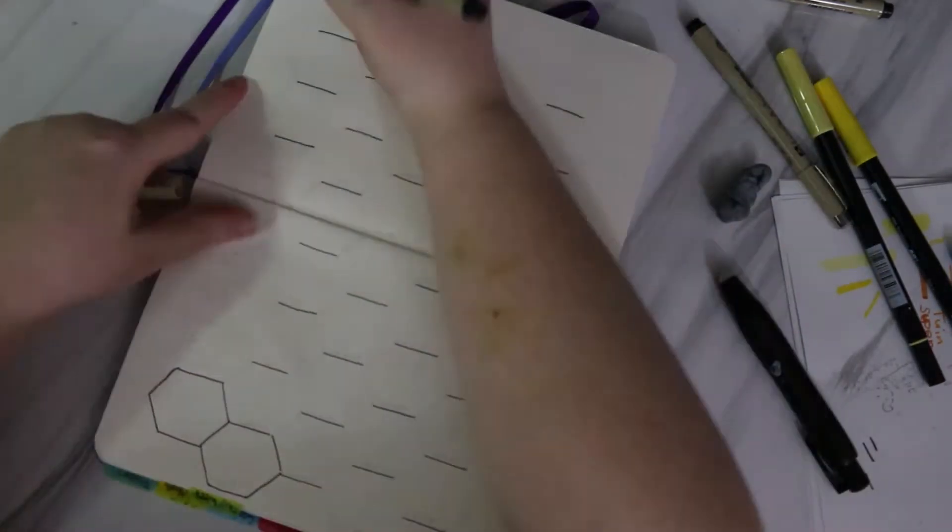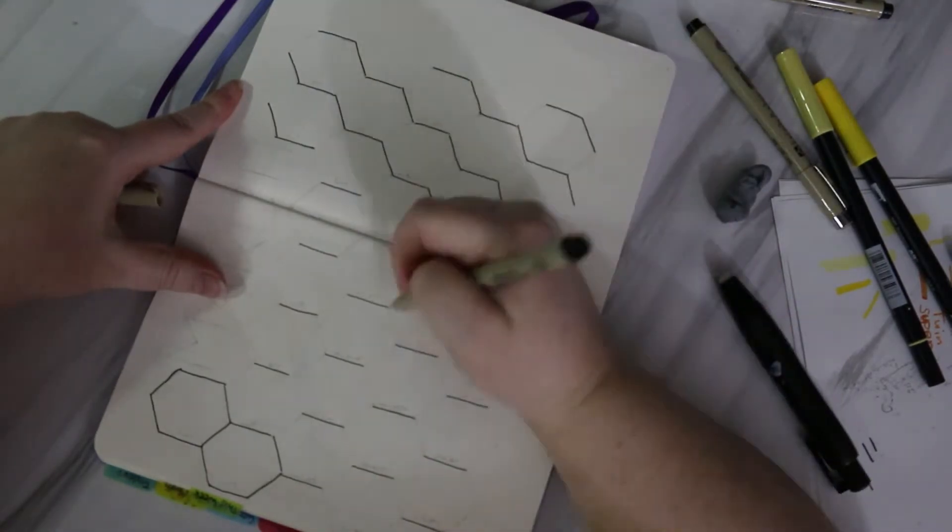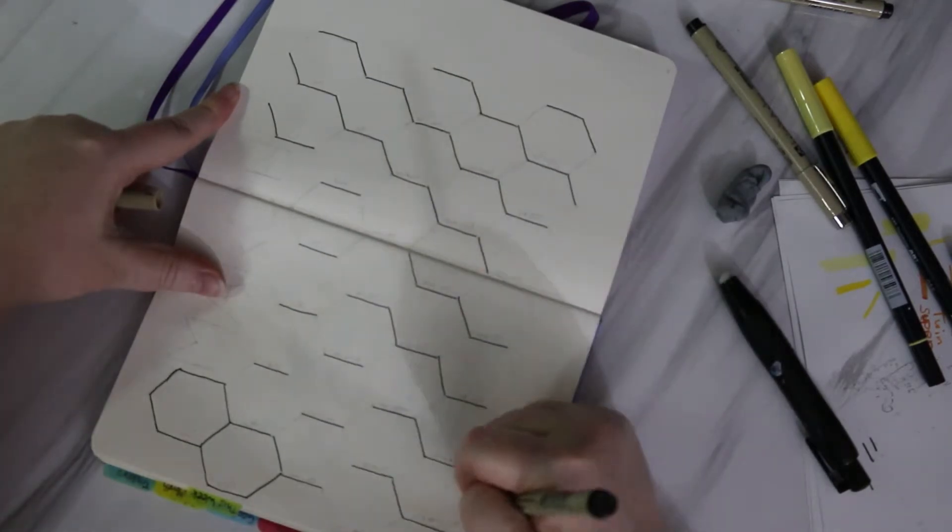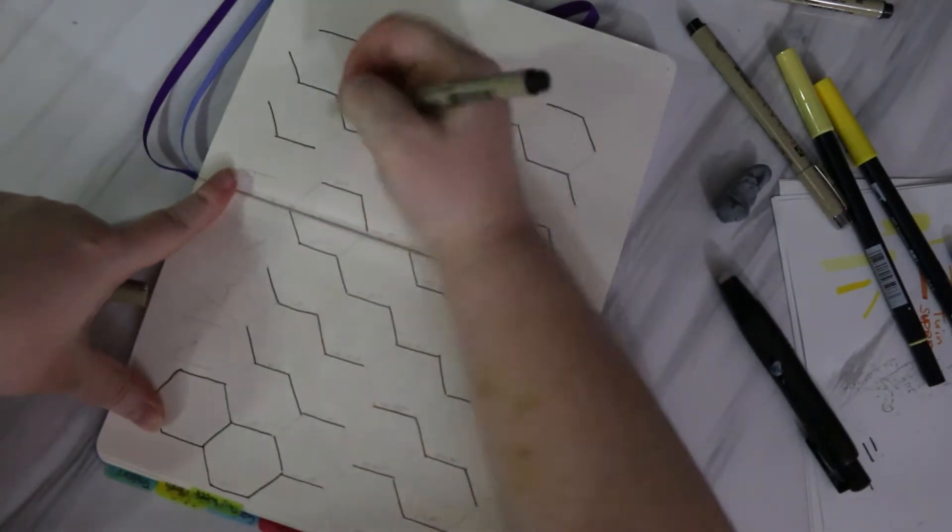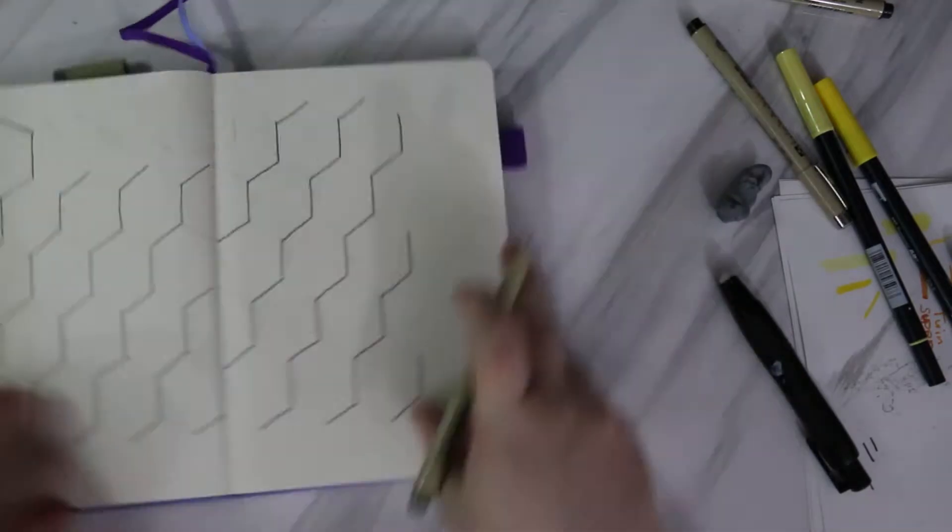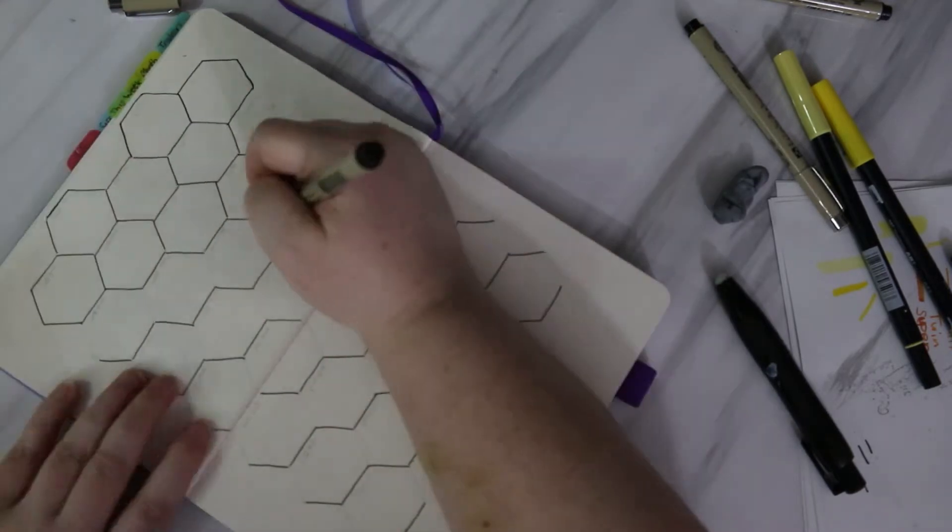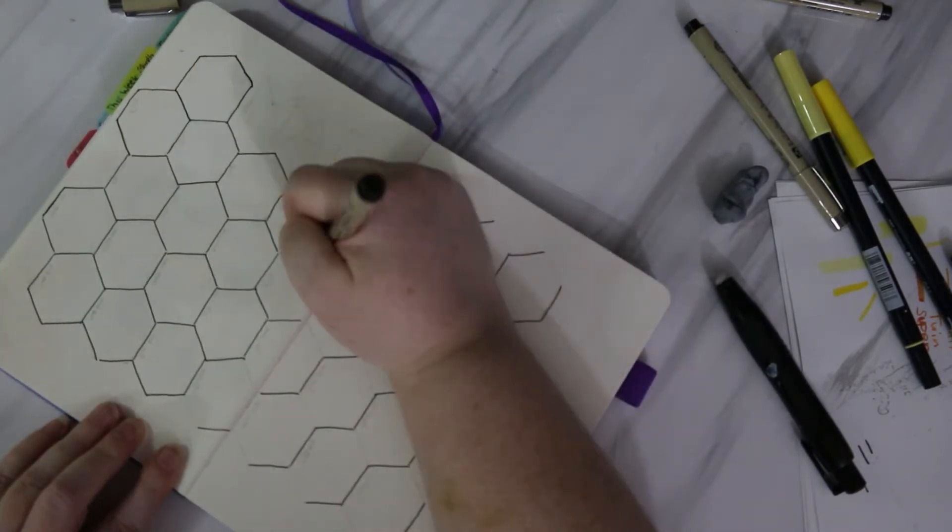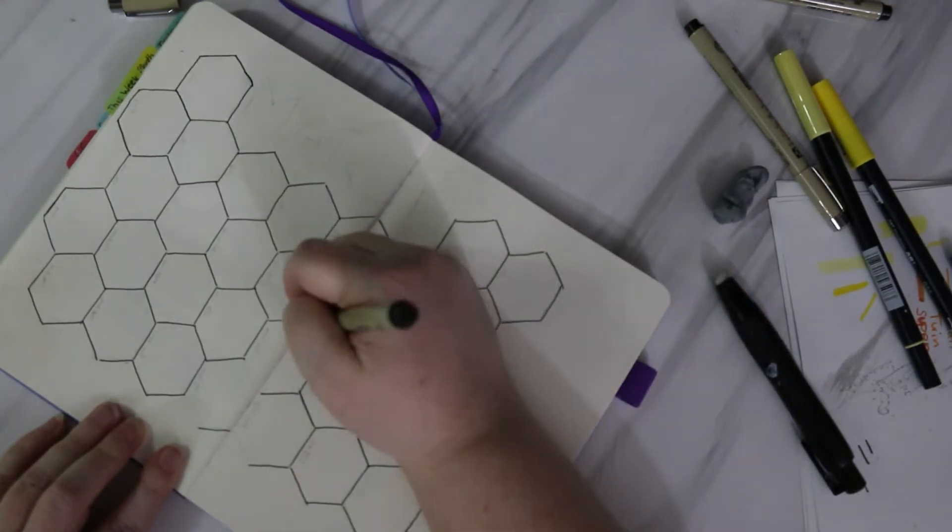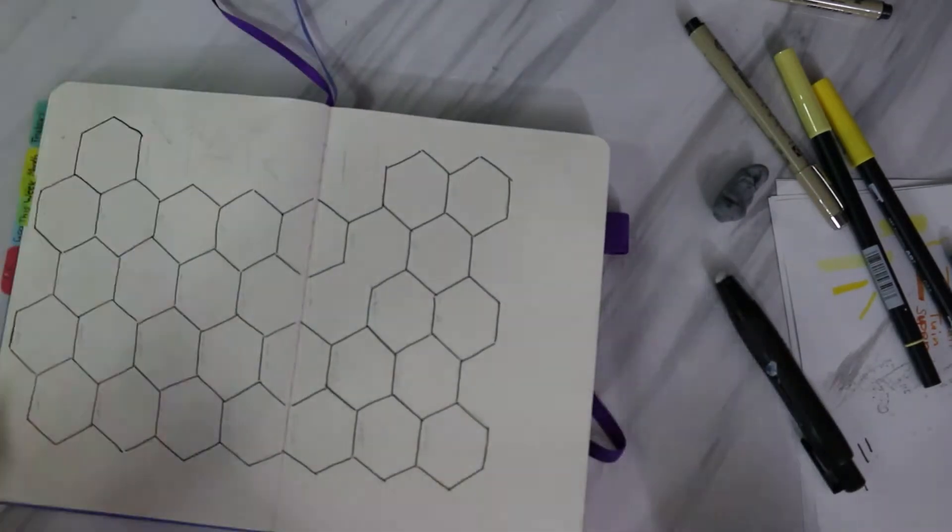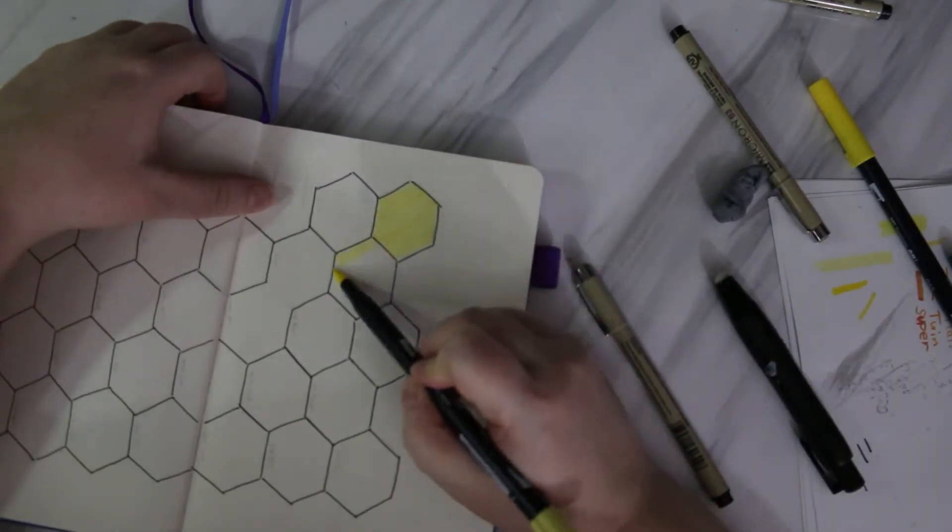I am also getting an Erin Condren life planner. If you're inclined to Erin Condren life planners, you should probably look at getting one now, though you will miss out on using the first couple of months. They are 40% off right now as of filming, so they are definitely worth a look if you want to try them out because they are a very expensive purchase, and 40% off is a pretty good deal.